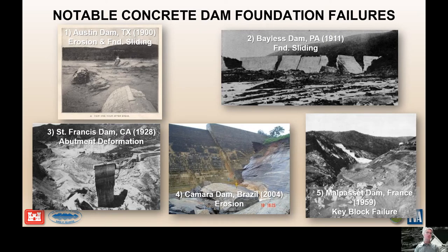Austin Dam in Texas, 1900, involved erosion of the toe of the foundation along a fault zone. That caused slight downstream rotation, causing the heel to crack, increased pore pressure, and it lifted and floated monoliths and carried them away. Bayless Dam in Pennsylvania failed in 1911 on a contact between shale and sandstone positioned about two feet below the foundation. It had high uplift pressures and low shear strength, and the block of rock in the horizontal bedding planes started to slide, displacing and cracking the dam, causing failure.